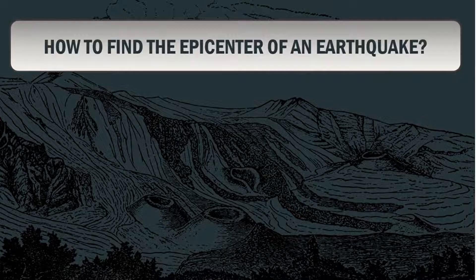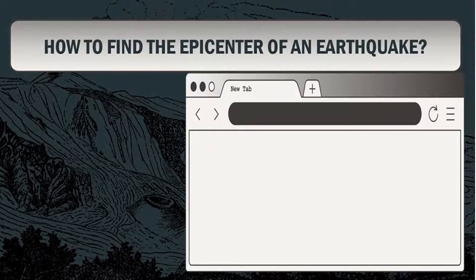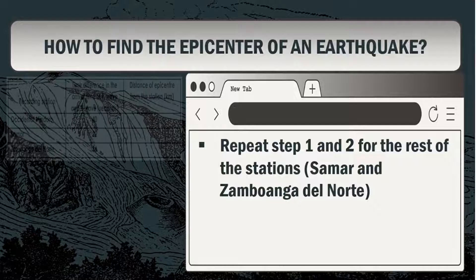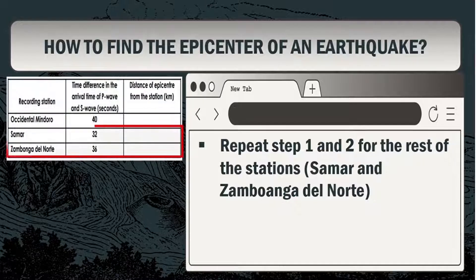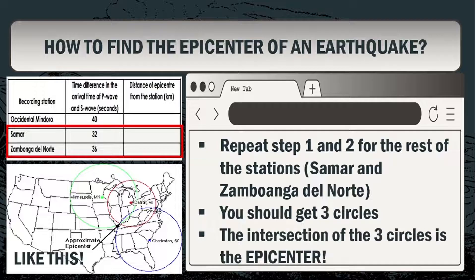Now it's time for you to compute for the remaining stations. Repeat Steps 1 and 2 for the other stations: Samar and Sambales del Norte. You should get 3 circles, and the intersection of the 3 circles is the location of the epicenter.